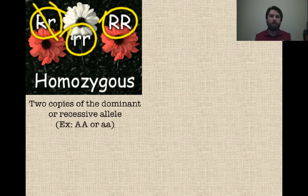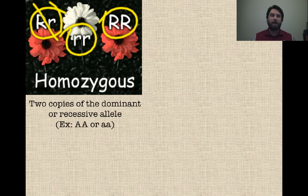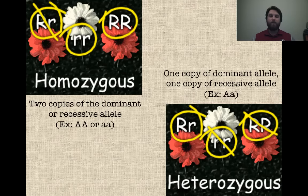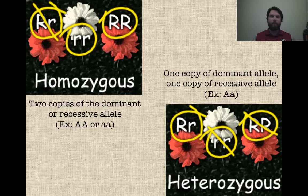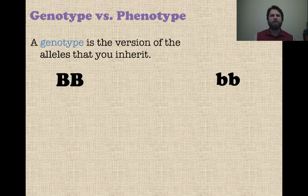The word homozygous means that you have two copies of either the dominant or the recessive allele. If you are homozygous dominant, you have two copies of the dominant allele for a particular gene — written as capital A, capital A. If you are homozygous recessive, you have two copies of the recessive allele — lowercase a, lowercase a. The other term is heterozygous, meaning you have one copy of the dominant allele and one copy of the recessive allele. If you are heterozygous, you will always express the dominant allele.